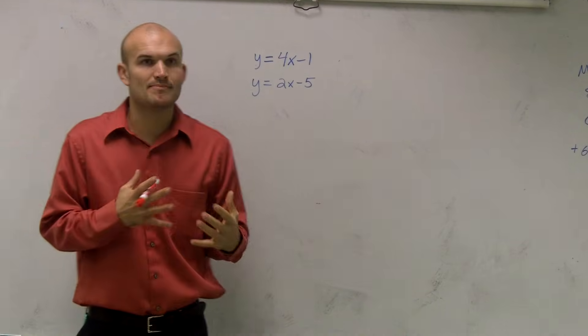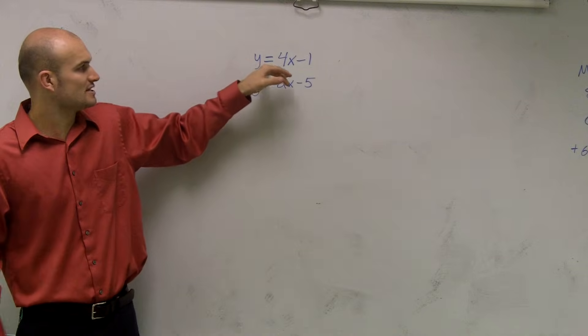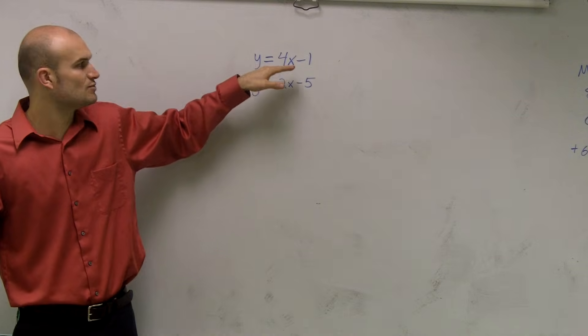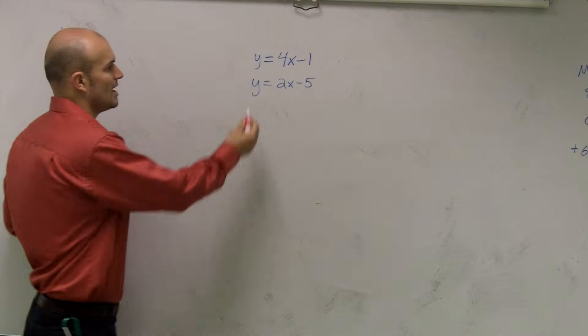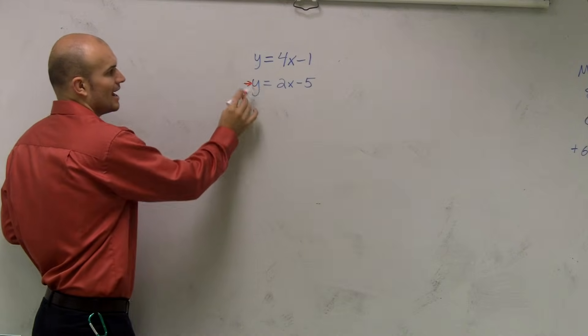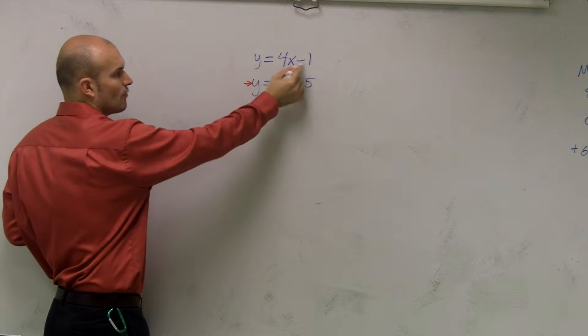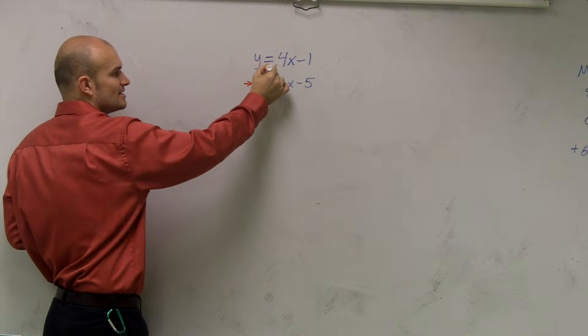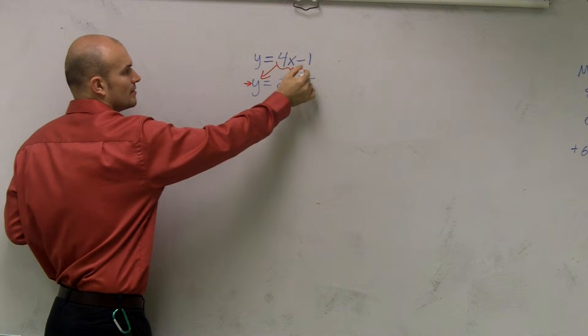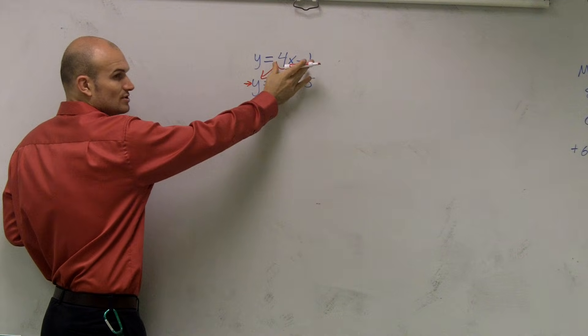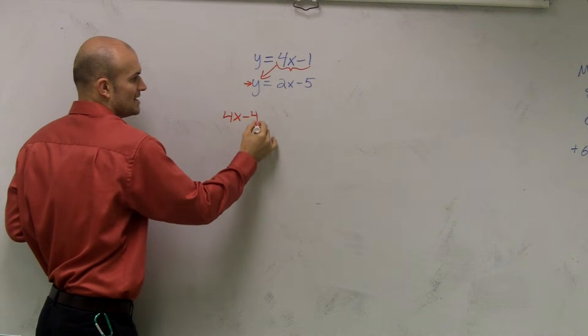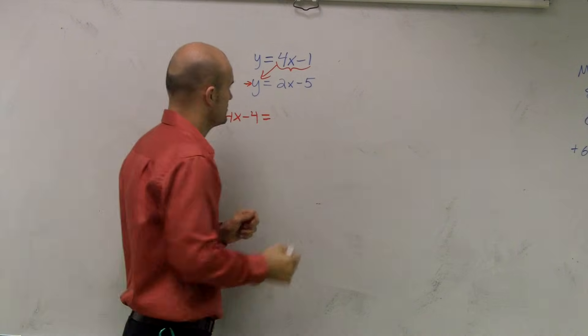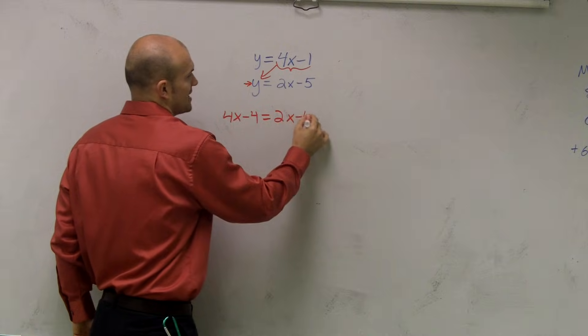So it doesn't really matter which y I'm going to substitute for. I just need to pick one. And what you could say is, rather than using this y, I can now say that y equals 4x minus 1. So what I'll do is I'm just going to plug this, what y equals, this expression in for this y. So therefore I have 4x minus 1 equals 3x minus 5.